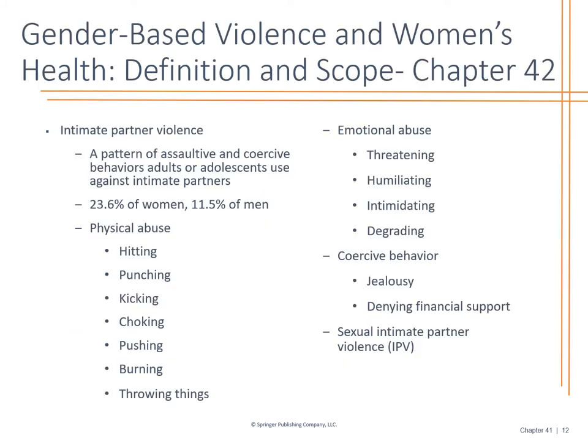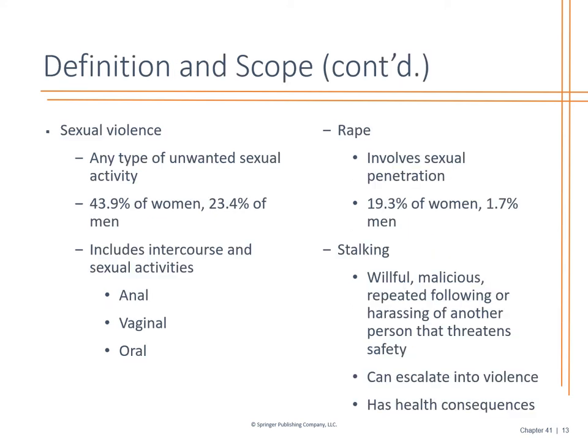Intimate partner violence is very significant, especially with women: 23.6% of women, 11.5% of men. Men appear to be a lower number; however, how many are undiagnosed? Does a man want to admit he's experiencing domestic violence from a female? There's that whole stigma of 'I'm the man, this shouldn't be happening.' It can be physical abuse, emotional abuse, coercive behavior, or sexual intimate partner violence — and this is why we screen for it during pregnancy. Sexual violence includes unwanted intercourse, sexual activities, rape, and stalking, regardless of whether they are in a relationship.